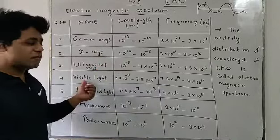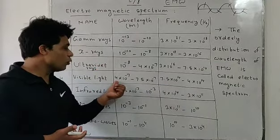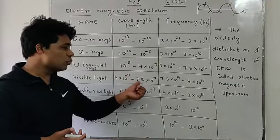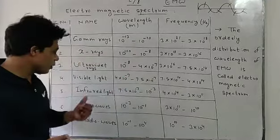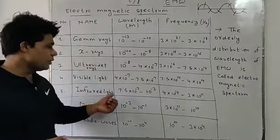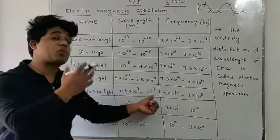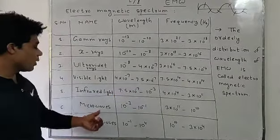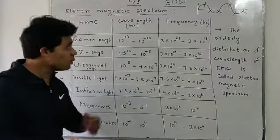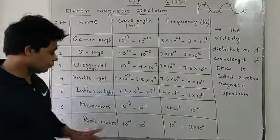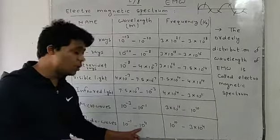Visible light has a wavelength of 4×10⁻⁷ to 7×10⁻⁷ meters. Infrared ranges from 7×10⁻⁷ to 10⁻³ meters. Microwave has a wavelength of 10⁻³ to 10⁻¹ meters, and radio waves range from 10⁻¹ to 10⁴ meters.